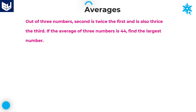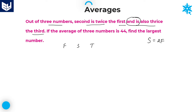Let's move on to the next question. Out of three numbers, the second is twice the first and is also thrice the third. Second is twice the first, and second is also thrice the third. The additional information given is: if the average of the three numbers is 44, find the largest number.